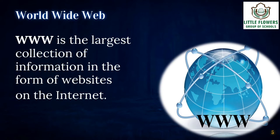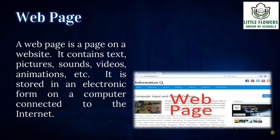World Wide Web (WWW) is the largest collection of information in the form of websites on the internet. A web page is a page on a website. It contains text, pictures, sounds, videos, animations, etc. It is stored in an electronic form on a computer connected to the internet.